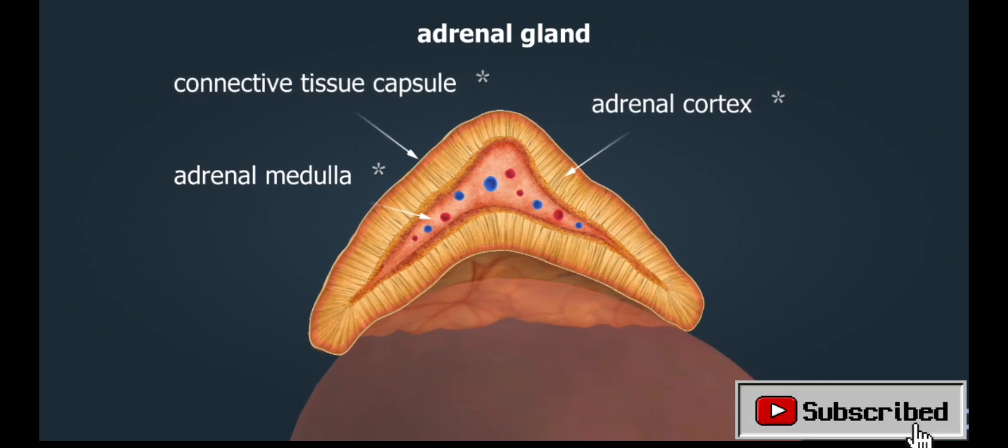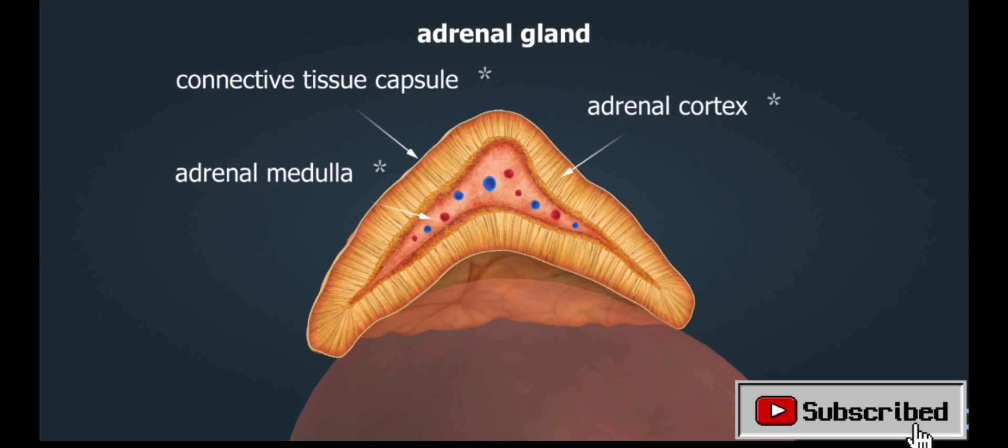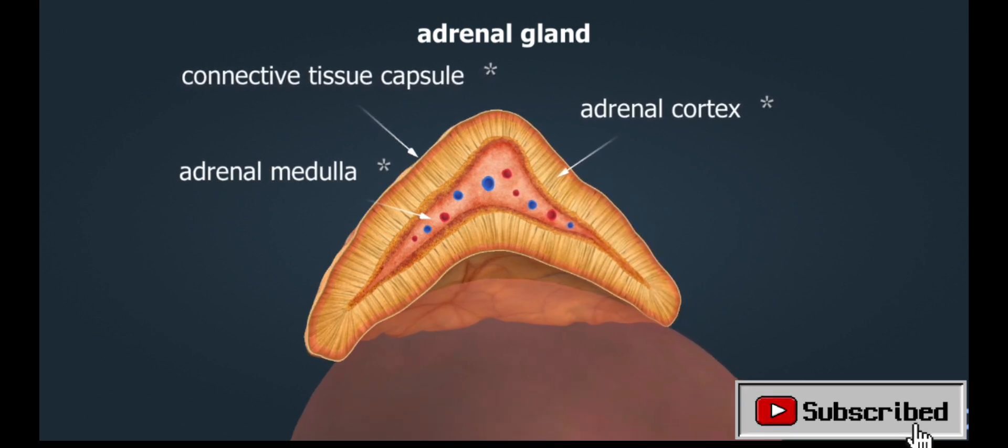The cortex and the medulla function completely independently of each other, so functionally they are two different endocrine glands.